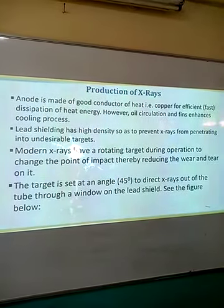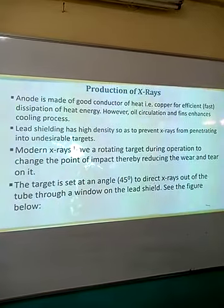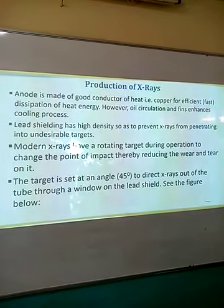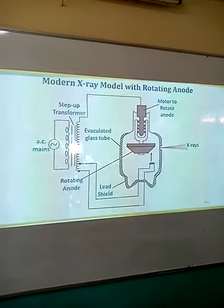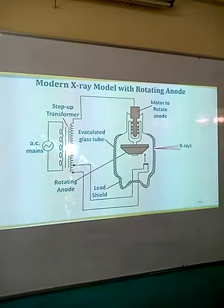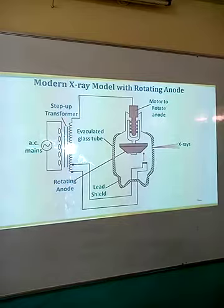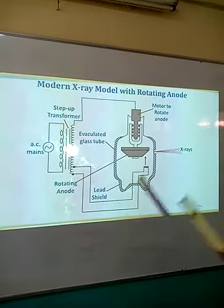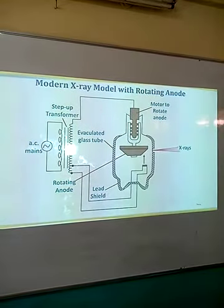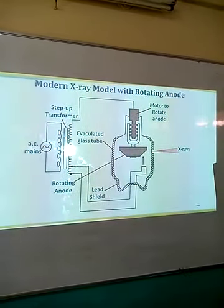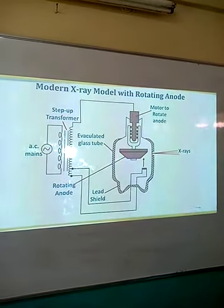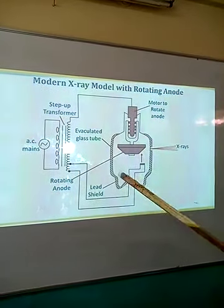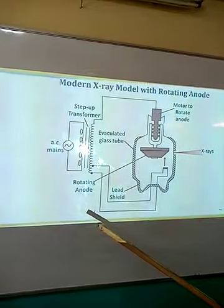The X-ray tube has undergone some evolution. We now have a modern X-ray tube with minor modifications from the original. In this modern X-ray tube, the anode is made up of a rotating material — it rotates, connected to a motor. As the electrons produced from the cathode hit the anode, the anode rotates. It is supposed to change the point of impact, and the purpose of changing the point of impact is to reduce the wear and tear at the anode. These are the parts or features of the new X-ray tube.